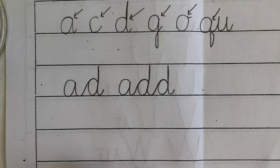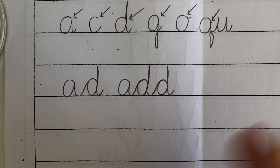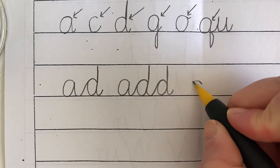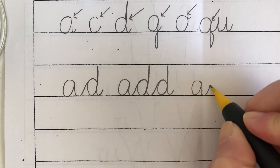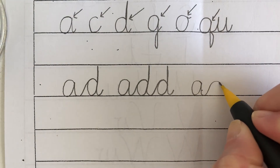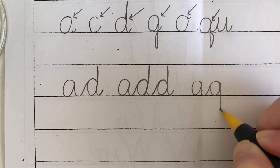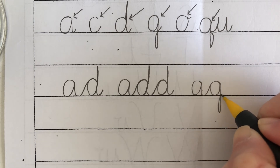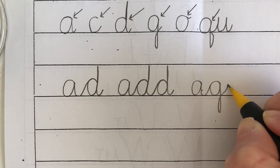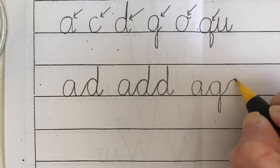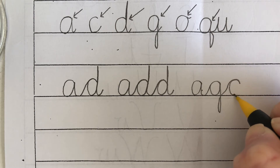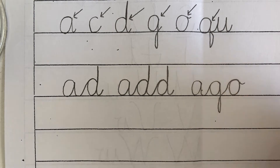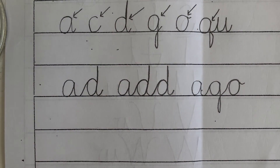Our next one is AGO — A-G-O. Two on the clock, upswing to two, stop, retrace, upswing to two, stop, retrace. There's AGO.